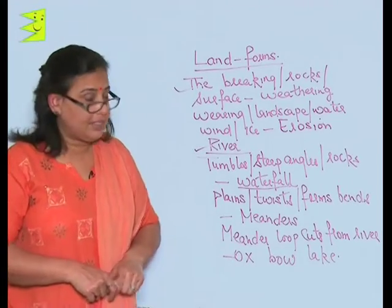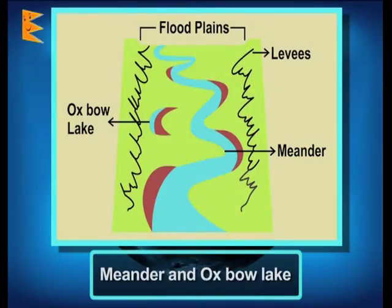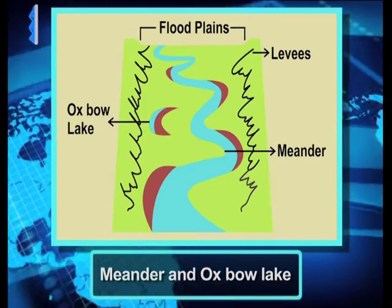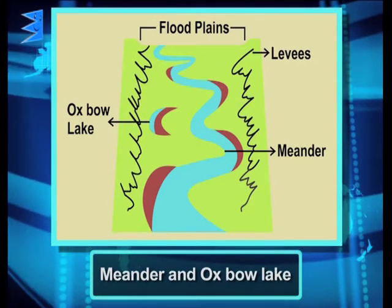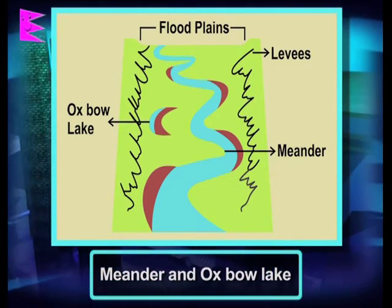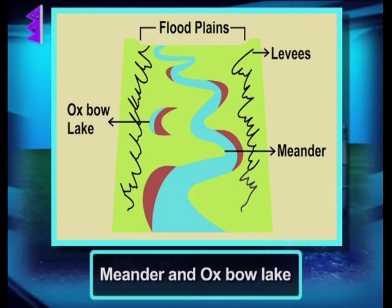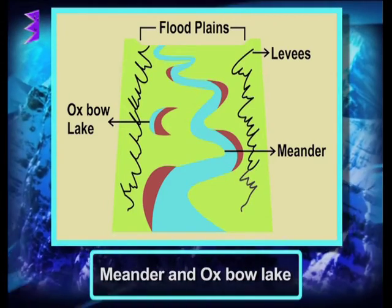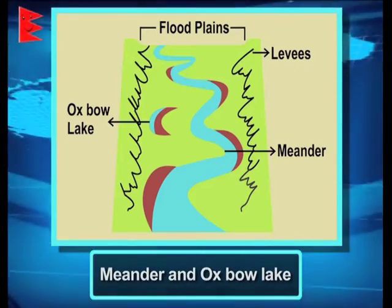Next is the meander. When the river reaches the plains, it twists and starts forming bends. These bends make up what is called a meander.